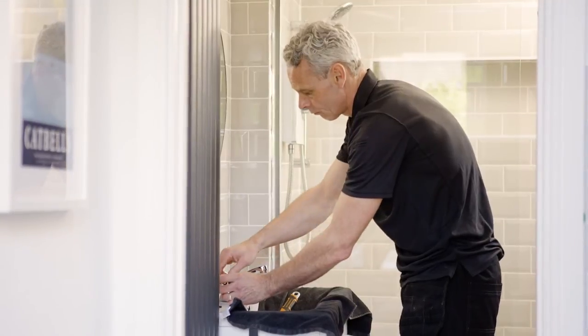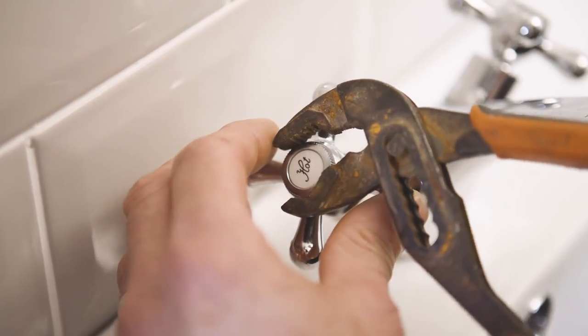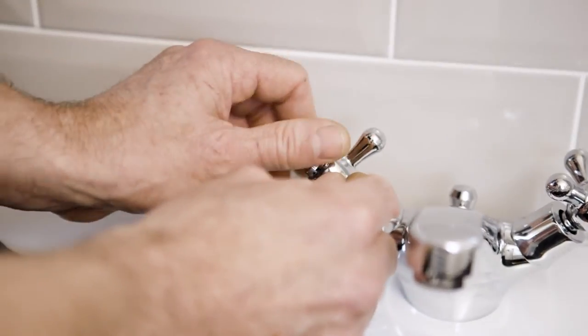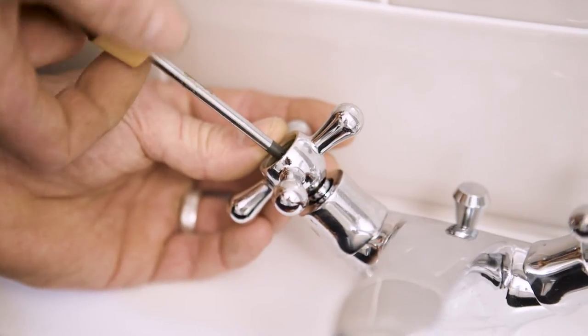You'll need to take the tap apart to repair it. First, remove the screws that are holding it together, usually found on the decorative hot or cold cap on top of the handles. Do this by hand or with a screwdriver.